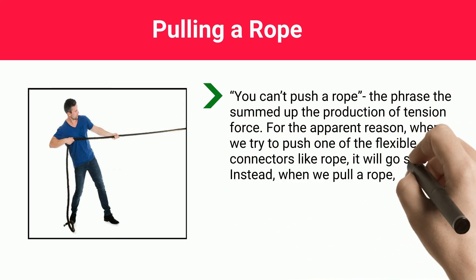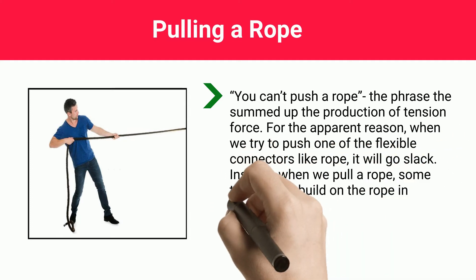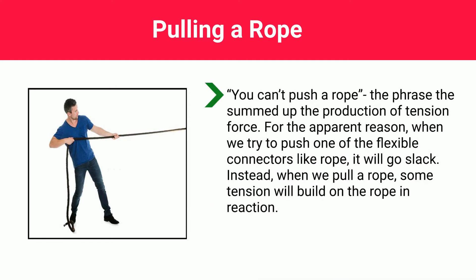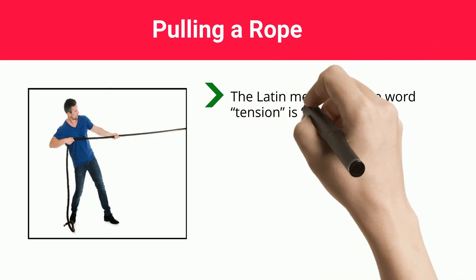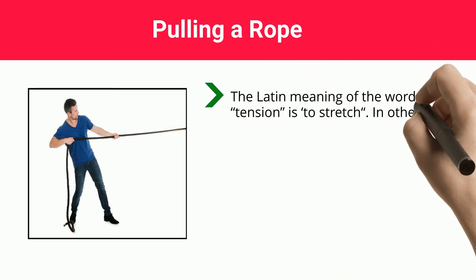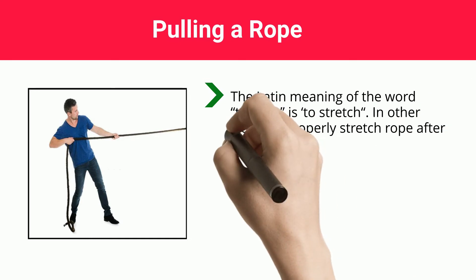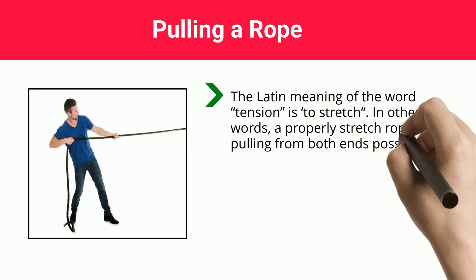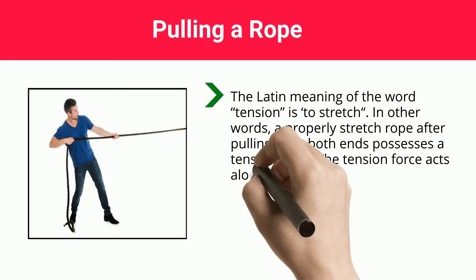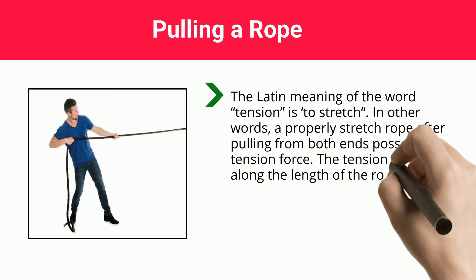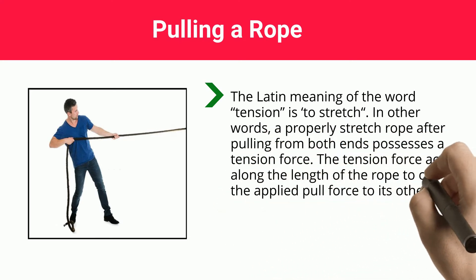Instead, when we pull a rope, some tension will build on the rope in reaction. The Latin meaning of the word tension is 'a stretch.' In other words, a properly stretched rope after pulling from both ends possesses a tension force. The tension force acts along the length of the rope to carry the applied pull force to its other end.